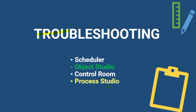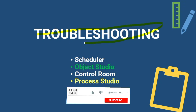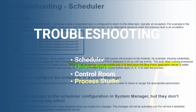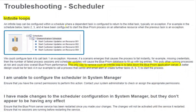For example, the infinite loop of the scheduler. In today's session we will troubleshoot some problems which occur in Process Studio, Object Studio, Control Room, and in the Scheduler. So let's start troubleshooting — three, two, one. Troubleshooting schedulers: infinite loop. See this scenario.